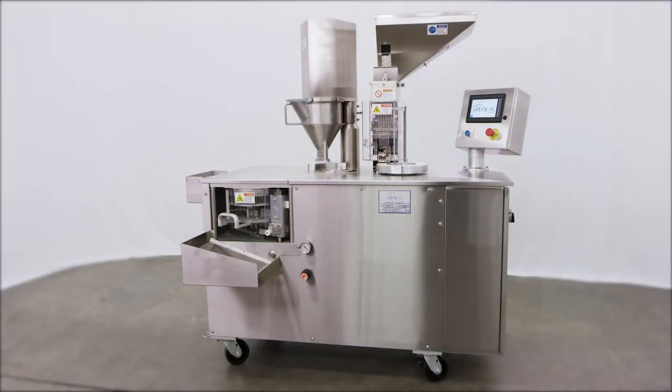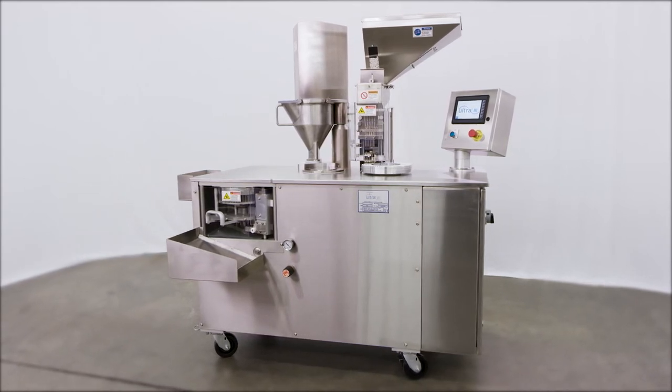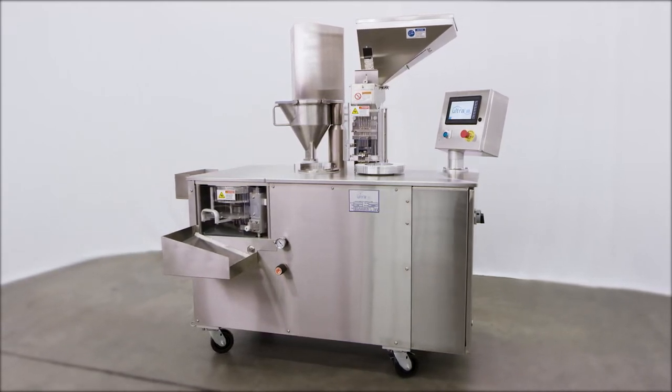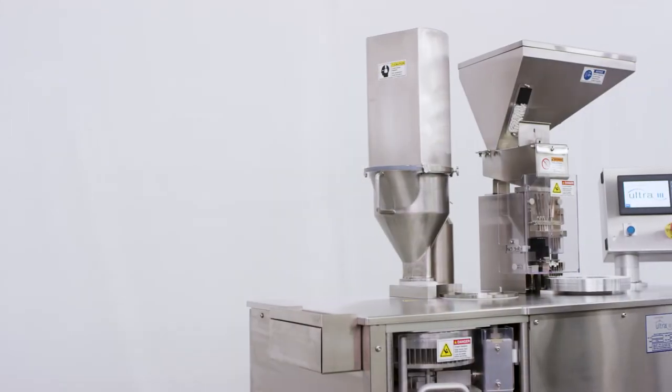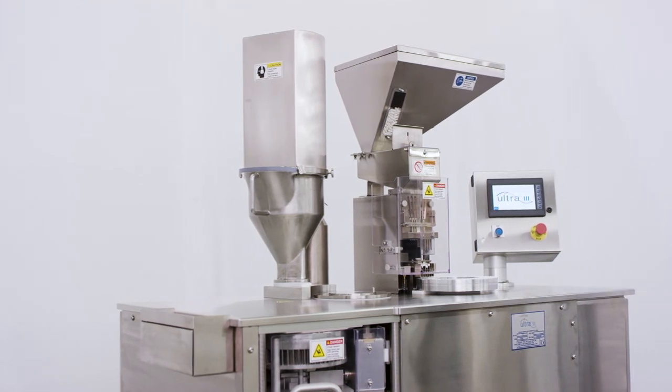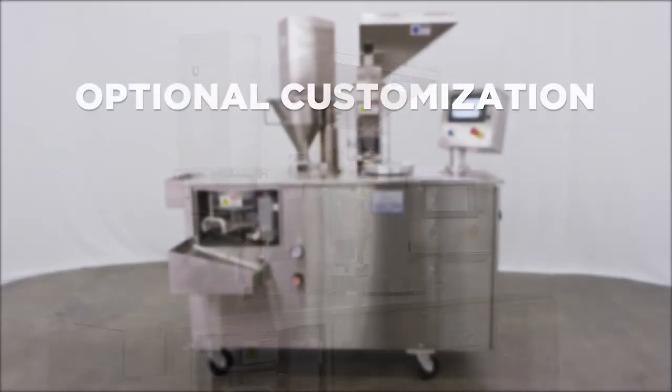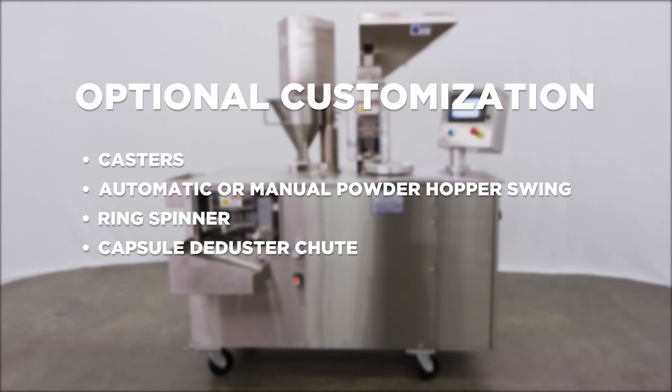The Capsigel Ultra 3 is a customizable modular machine that can be configured to fit your product and operating needs. In addition to allowing for interchangeable parts to fit any capsule size, the unit can also be ordered with a number of optional features, including casters, automatic or manual powder hopper swing, ring spinner, capsule de-duster chute, and vacuum pump.